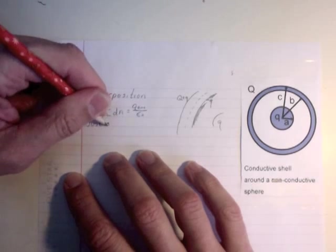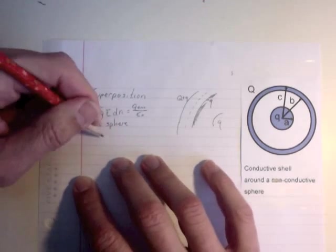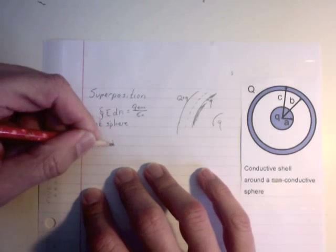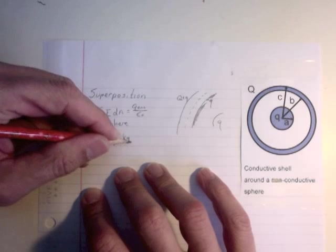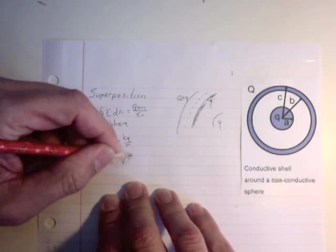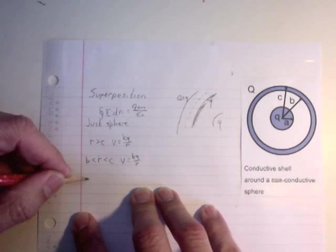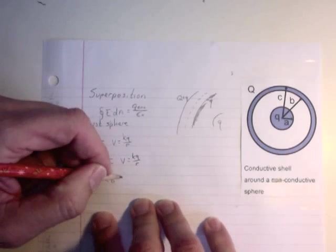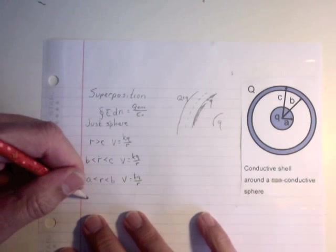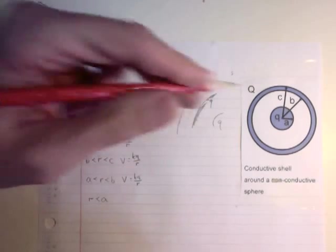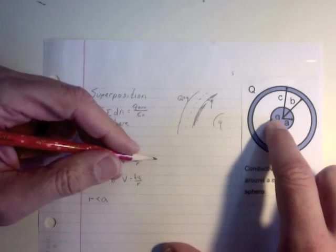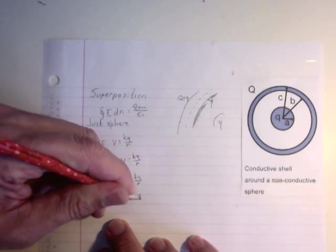Just sphere, if I ignore the shell, then the voltage for R greater than C, V equals K little q over R. For B less than R less than C, it's still Kq over R. For A less than R less than B, it's still Kq over R. We're just talking about that sphere there. And then finally, for R less than A, it's going to be the same as, remember the voltage Kq over R, when you get into A, that R would be equal to A. And then it stops changing because there's no electric field in there, so it just ends up being Kq over A.